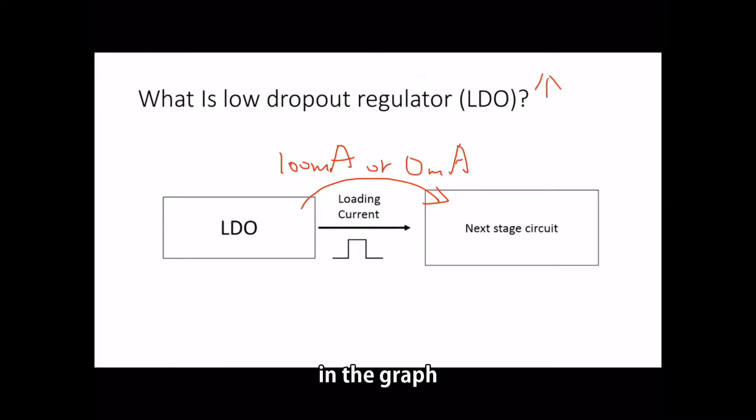In the graph, you may think about it in this way. Suddenly it increased to 100mA and suddenly it dropped to 0mA. And the responsibility of low dropout voltage regulator is to try to maintain the voltage as stable as possible.